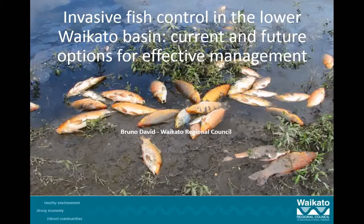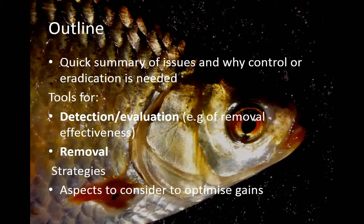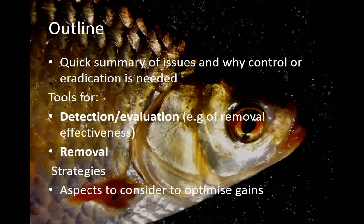Most of you here probably know what the issues are, so I'm going to give a real quick summary of issues and why control or eradication is needed. I mainly want to talk about tools around detection and evaluation, and also tools around removal — some which cross into both boundaries — and then a few strategies and aspects to consider to try and optimise gains.